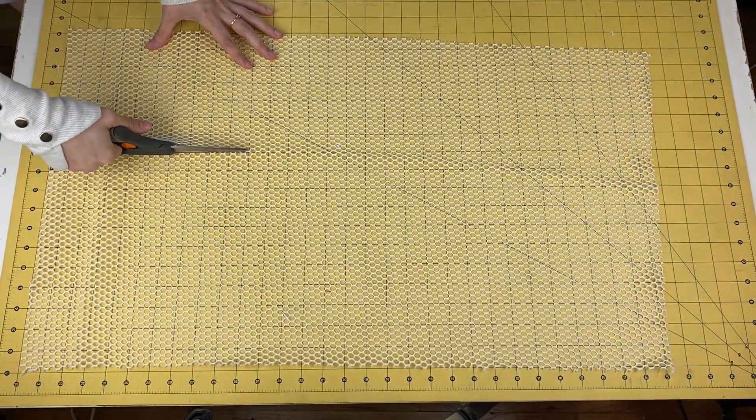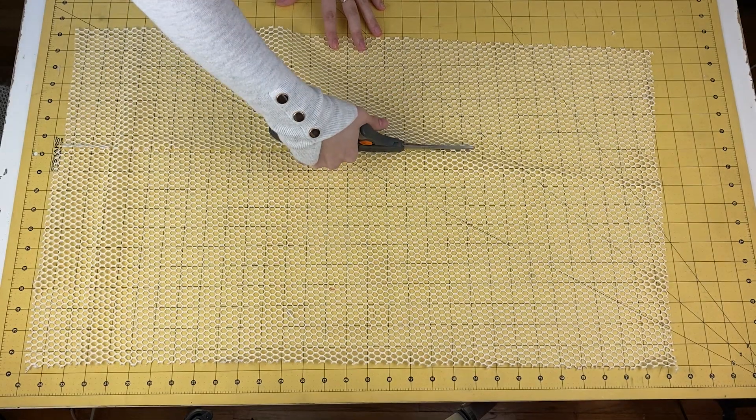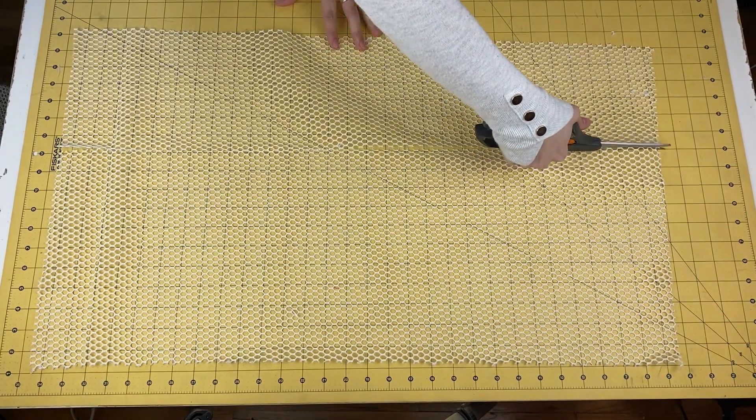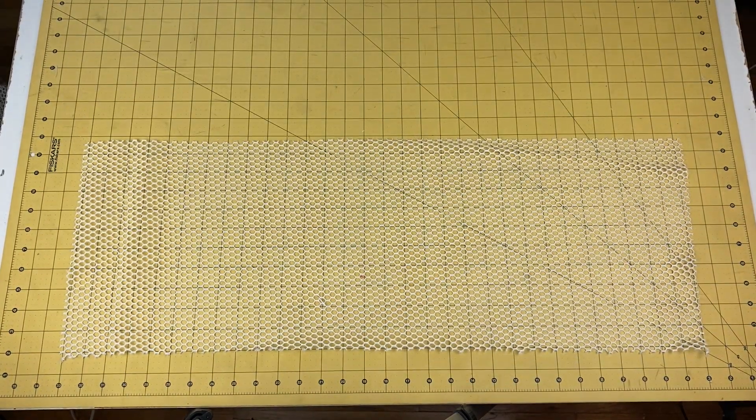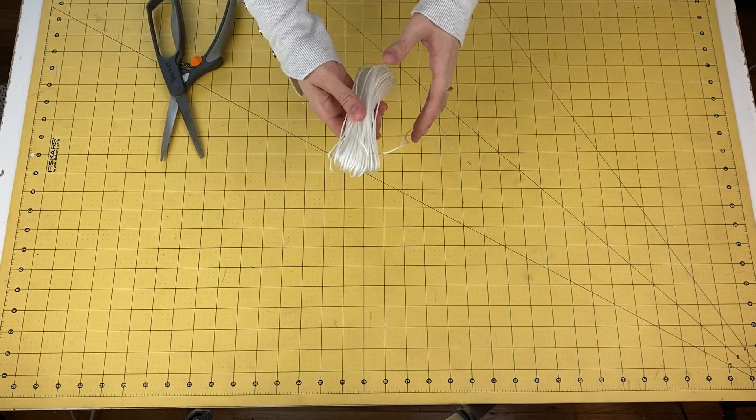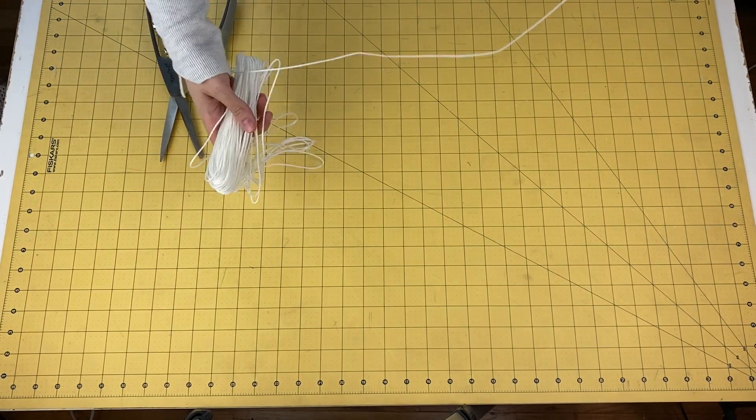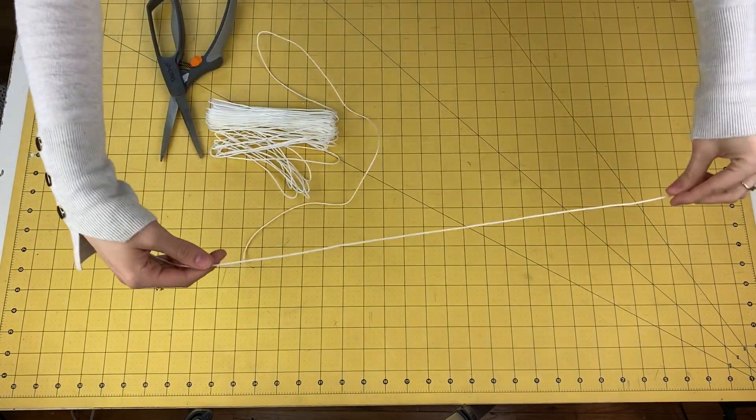Alternatively, you can do what I'm doing if you have a board with measurements on it like I do. I measured out the 32 inches by 12 inches on the mat and cut. Now cut two pieces of cording that are 30 inches for the drawstring closure.